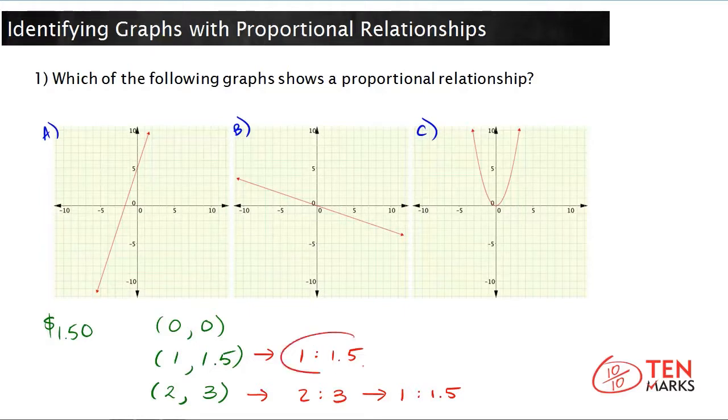Now look here. 1 to 1.5 and 1 to 1.5. So the ratio of x to y with both ordered pairs is the same, and this relationship passes through the (0,0), so it's proportional.